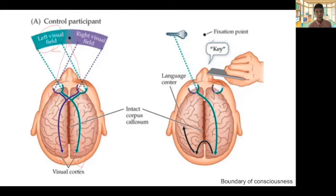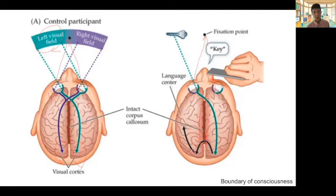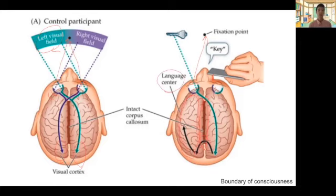This is a famous split-brain experiment with the associated visual systems architecture — I'll probably ask this in the quiz. In control participants, when you fixate on a central dot, the right side of the visual field gets projected to the left visual cortex and the left side goes to the right visual cortex. If one eye is blocked, the other eye — while fixating on the center — can still see stimuli, which go to one hemisphere and, through corpus callosum connections, transfer to the homologous areas of the other hemisphere. Since most people generate language in the left hemisphere, the person can say 'I saw a key.'